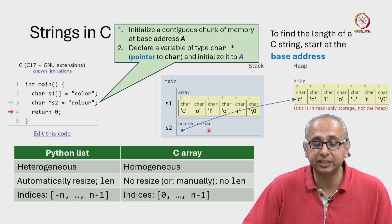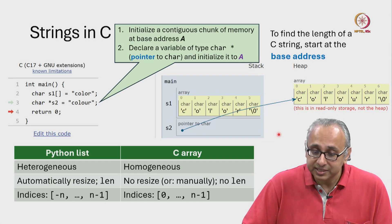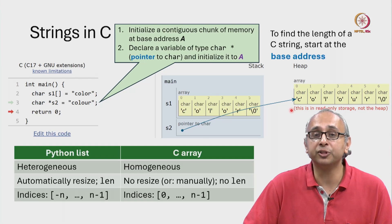All that lives at this location is a number. That number is the base address of this array.